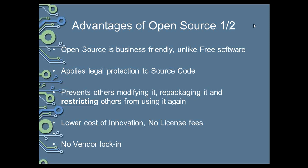Open source is business friendly, unlike free software. It applies legal protection to source code. It also prevents others from modifying it, repackaging it, and restricting others from using it again. We can categorize this as plagiarism — we would not want anybody to modify, repackage it, restrict others, or construct their own work. It also guarantees a lower cost of innovation.